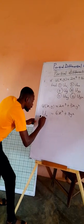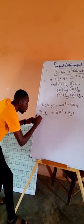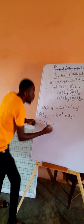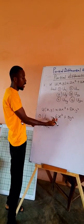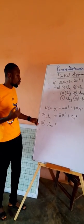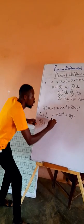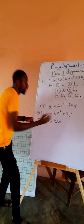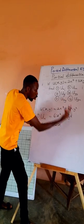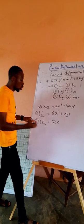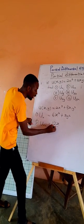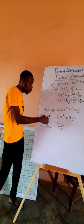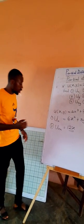Now let's do the partial differentiation with respect to x twice — ∂²U/∂x². It simply means we take what we differentiated before and differentiate again. Differentiating 6x gives 2x. There is no x in the second term, 3y squared, so we consider the whole of that as constant. This becomes the partial differentiation of U with respect to x two times.